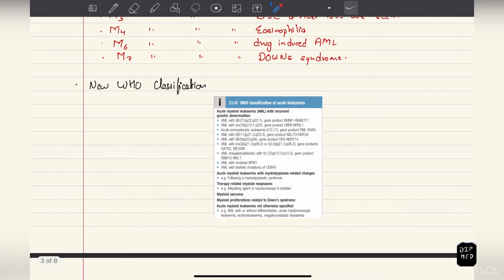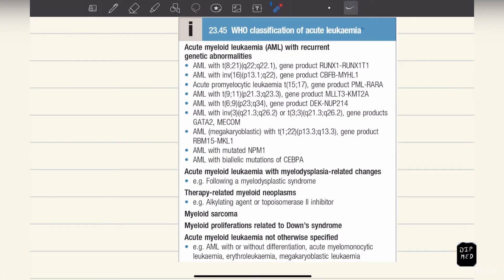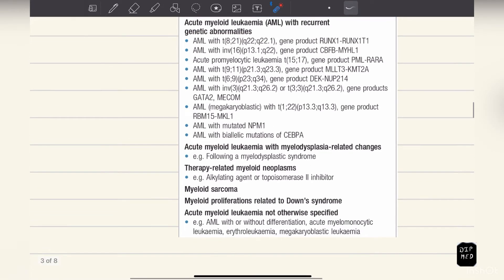This is the new WHO classification of acute leukemia. This classification is used more than the FAB classification nowadays. This includes acute myeloid leukemia with recurrent genetic abnormalities, so here AML are classified on the basis of translocations. Also includes: acute myeloid leukemia with myeloid dysplasia-related changes, therapy-related myeloid neoplasms, myeloid sarcoma, myeloid proliferations related to Down syndrome, and acute myeloid leukemia not otherwise specified.